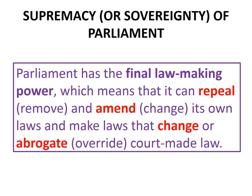The supremacy of Parliament means two things. First, Parliament can repeal — that is remove — and amend — that is change — its own laws; Parliament can repeal or amend statutes it has previously passed. Second, Parliament can make laws that change or abrogate, that is override, court-made law. If Parliament wants to, it can make a law that replaces or overturns common law made by judges, changing a precedent established by a court or the meaning of a word interpreted by a court in a statute.